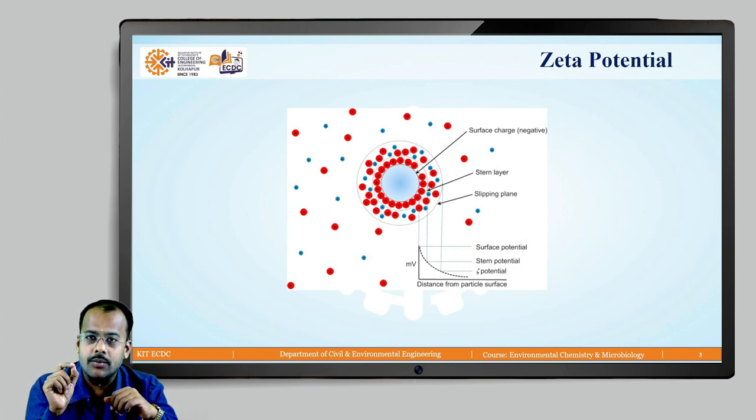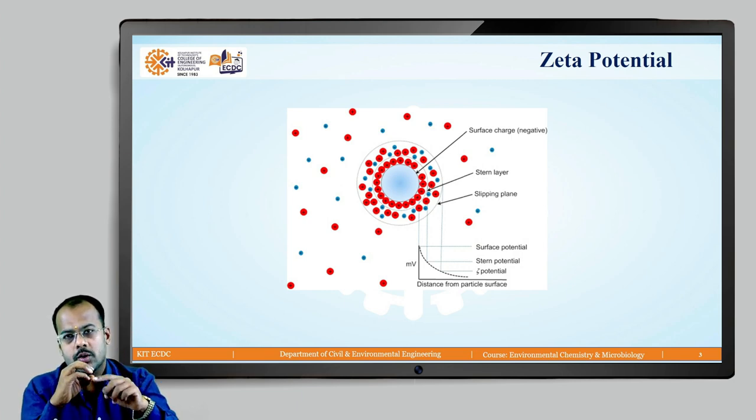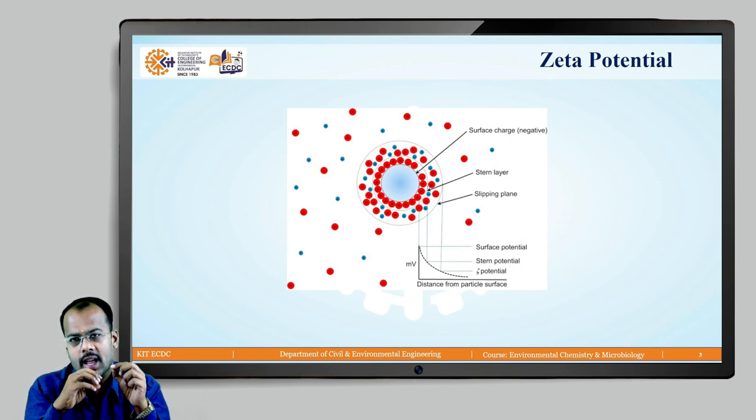Any particle which is present on the slipping plane, I will repeat, please remember any particle which is present on the slipping plane, the charge on that particular particle is called zeta potential. At the outermost orbit, you can consider the slipping plane. Any particle having a charge at the outermost orbit can be denoted by the zeta potential.